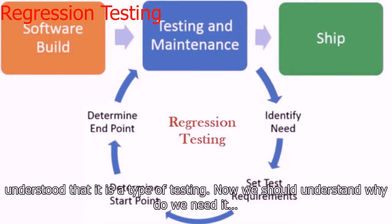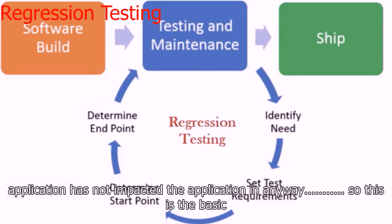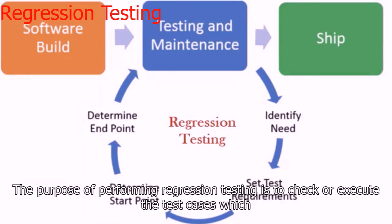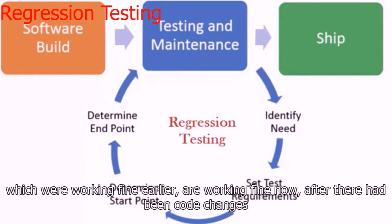We should clearly understand why we need regression testing. We do regression testing to check whether any code changes that have been done on the application have not impacted the application in any way. The purpose is to execute all the test cases which have already been executed, in order to ensure that all existing functionalities which were working fine earlier are still working fine after code changes.